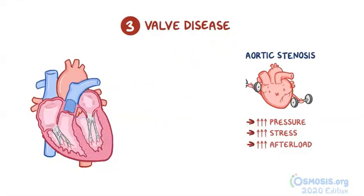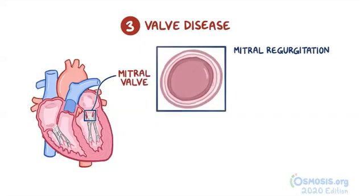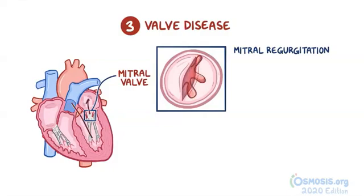On the flip side, there's mitral regurgitation, which is when the mitral valve — between the left atrium and the left ventricle — doesn't close all the way. So during ejection, blood leaks back into the left atrium. This decreases the stress on the left ventricular wall, therefore decreasing afterload.